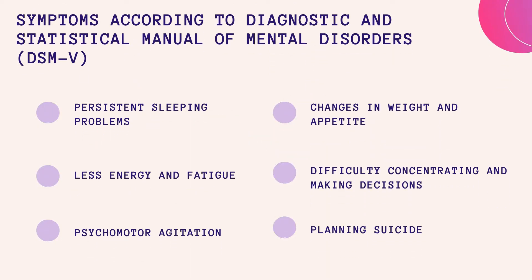The DSM-5 describes a major depressive episode as at least two weeks of depressed mood, as well as at least six other symptoms, which are persistent sleeping problems, change in weight and appetite, not enough energy, difficulty concentrating and making decisions, psychomotor agitation or retardation, and recurrent suicidal thoughts.